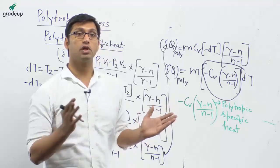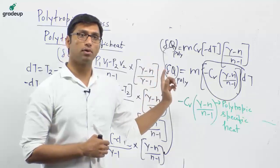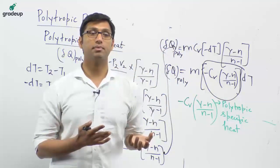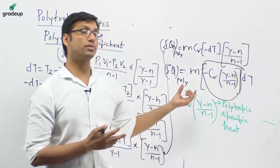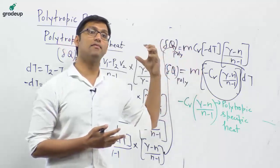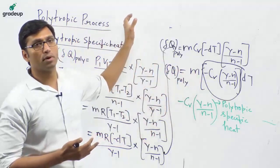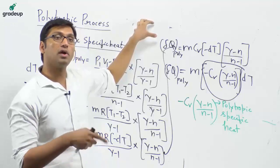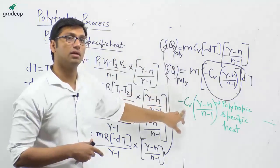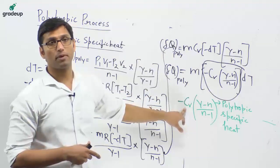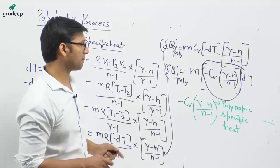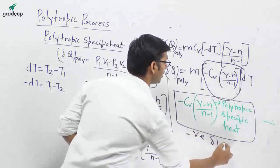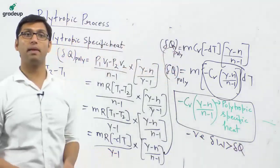Why is polytropic specific heat negative? Because in the polytropic process, although heat is supplied to the system, work transfer exceeds heat transfer. Since work is greater than heat supplied, internal energy decreases — temperature decreases even though heat is supplied. That is why polytropic specific heat is negative — work transfer is greater than heat transfer in the polytropic process.